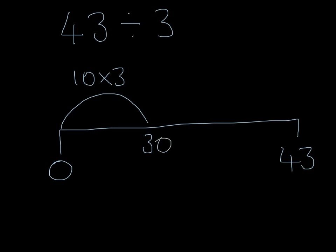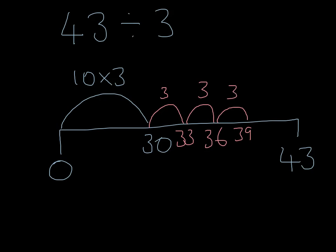Then we can continue with our groups of 3. Another group of 3 makes 33. Another group of 3 makes 36. Another group of 3 makes 39. Another group of 3 makes 42. We have nearly reached our target of 43. If we have another group of 3, that will mean we go over 43.